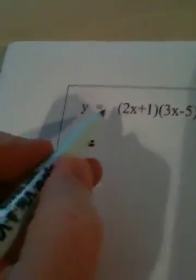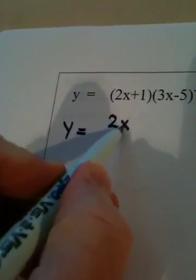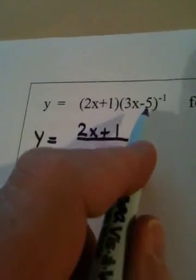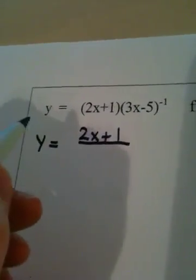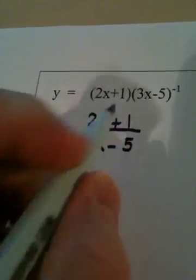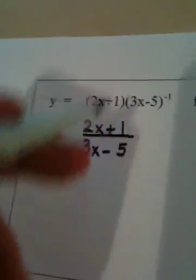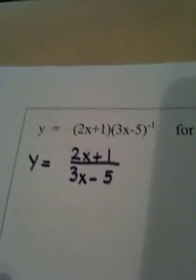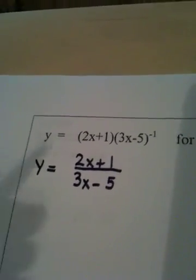2x plus 1 stays in the numerator because 3x minus 5 is raised to the negative first power. It is going to go to the denominator because negative 1 takes the reciprocal of the original expression. Now next thing we have to do here...